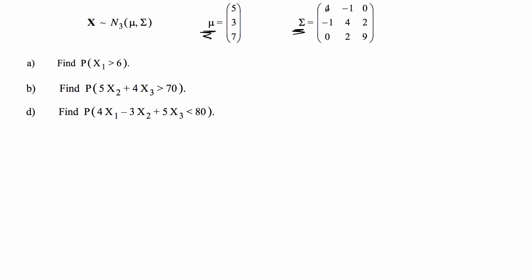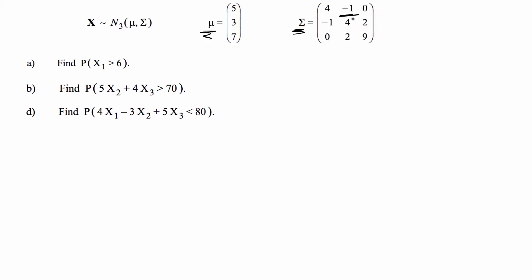The covariance matrix has the variances on the main diagonal. This is the variance of x1, variance of x2, variance of x3, and then the off-diagonal portions have the covariances. For example, this value is the covariance between x1 (first row) and x2 (second column). We can use that to find these different probabilities.